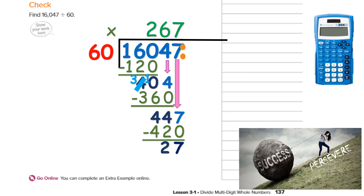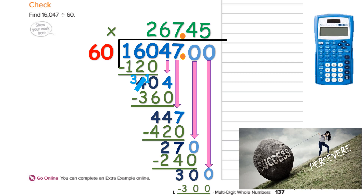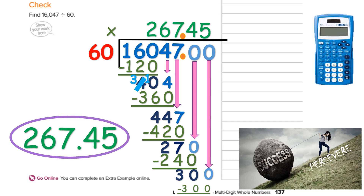So we're going to annex — add that decimal, bring it straight up. Notice how everything is lining up nice and neat so I can keep track of where I am. I add a 0 behind the decimal and bring it down. Now I have 270 divided by 60. 270 divided by 60 goes 4 times because 4 times 60 is 240. I subtract: 0 minus 0 is 0, 7 minus 4 is 3. That 30 is smaller than 60, so I need to add a 0. Will 60 go into 300? Yes — 5 times 60 is 300. I have a 0 remainder. My final answer is 267.45, and I circle it.